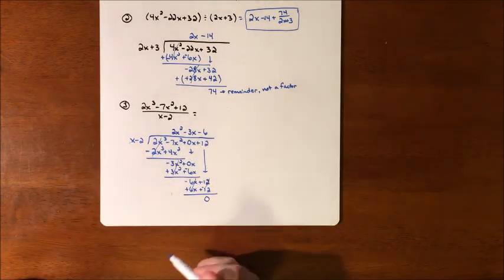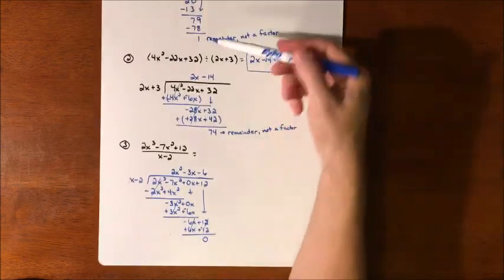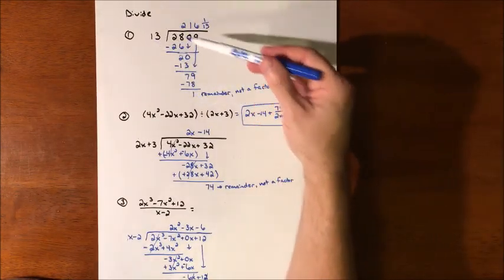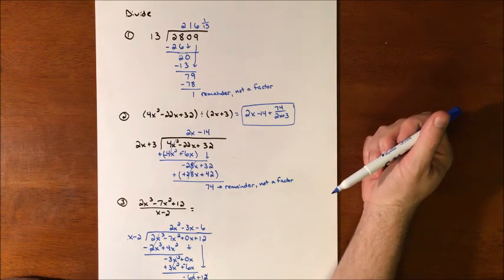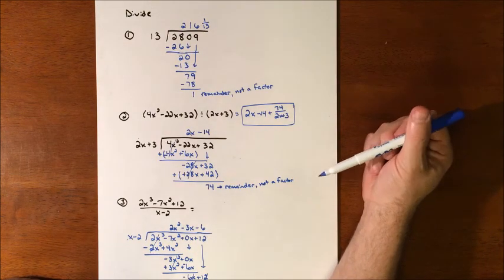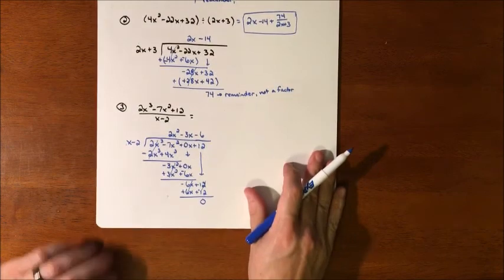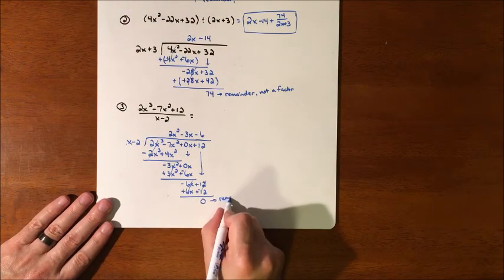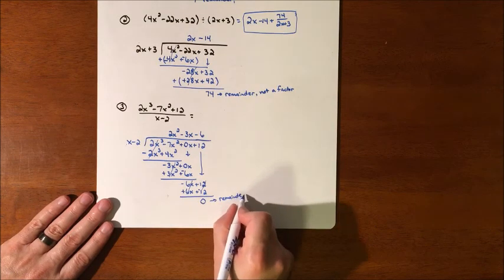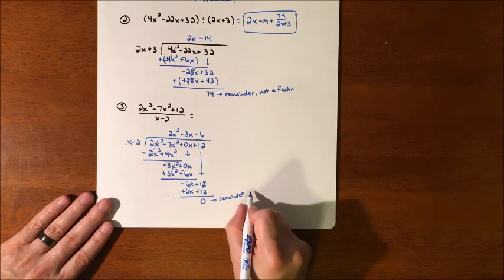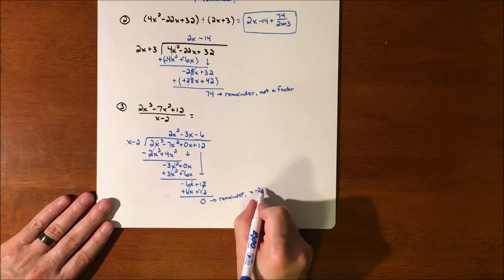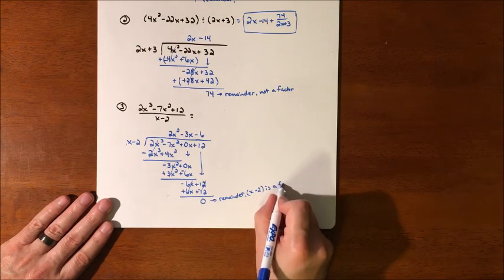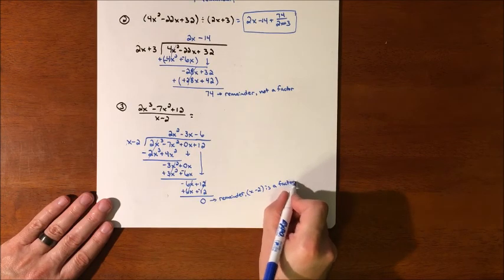If you divide something in, and if we would have gotten a 0 for the remainder up here, that meant that that value would have divided in evenly. And if it divided in evenly, that also meant that it was a factor. So we have the fact that this is our remainder, which also means that x minus 2 is a factor. Divides in evenly.